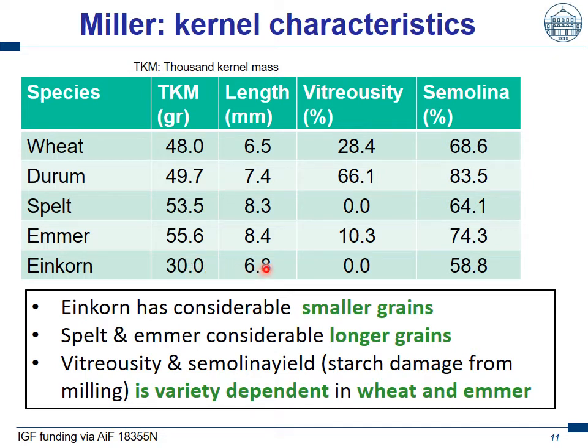This 1000-kernel mass — when we look at the length of the kernels, which is similar to that of bread wheat — means the einkorn kernels must be much smaller than those of bread wheat. And this has severe consequences for milling. When you imagine much smaller kernels than bread wheat, that means we have a smaller amount of endosperm with roughly the same amount of aleurone layer and other outer layers, meaning the flour yield of extracted refined flour is much lower in einkorn than in the other wheat species.